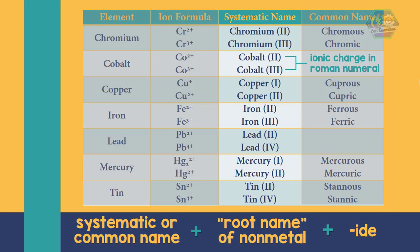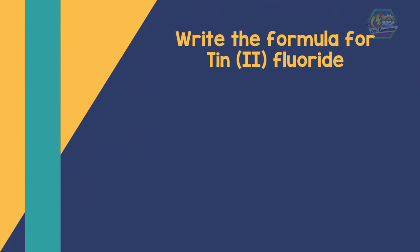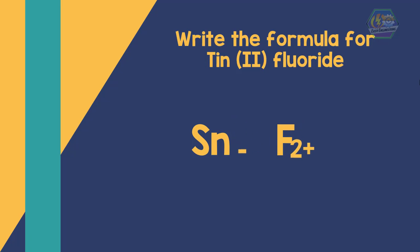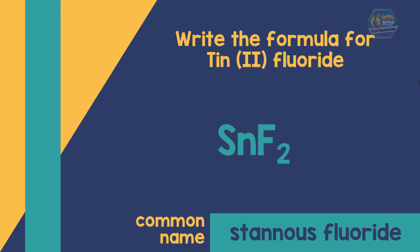For example, to write the formula for tin(II) fluoride, we apply the crisscross method using the given ionic charges to obtain the formula. The common name of this compound is stannous fluoride.